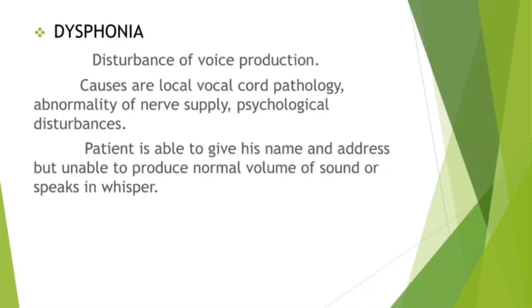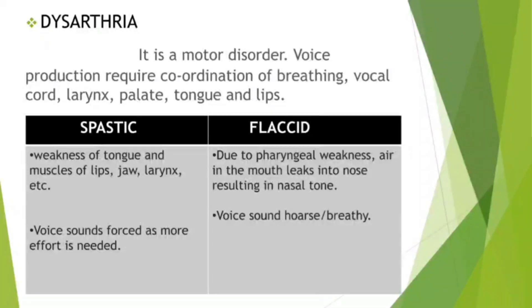Dysphonia is a disturbance of voice production. Causes include local vocal cord pathology, abnormality of nerve supply, and psychological disturbances. The patient is able to give their name and address but is unable to produce normal volume of sound or speaks in a whisper. Dysarthria is a motor disorder — voice production requires coordination of breathing, vocal cord, larynx, palate, tongue, and lips. It is of two types: spastic, which involves weakness of tongue and muscles of lips, jaw, and larynx, causing voice to sound forced; and flaccid, where due to pharyngeal weakness, air leaks into the nose resulting in a nasal tone, and voice sounds hoarse and breathy.